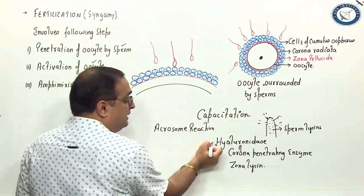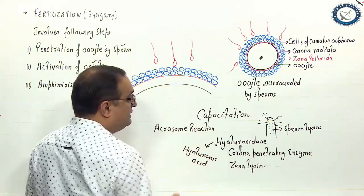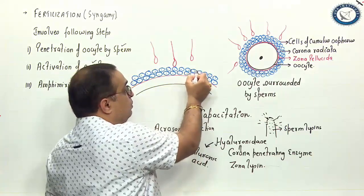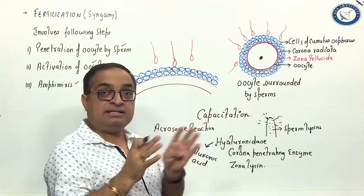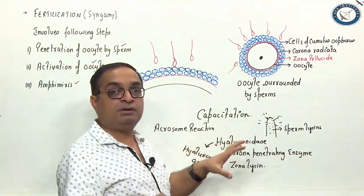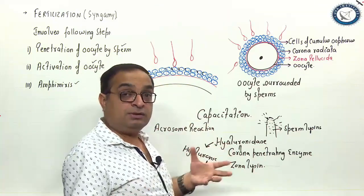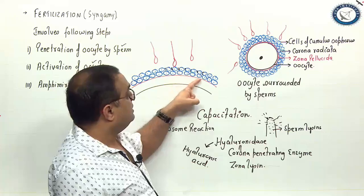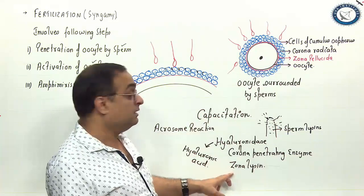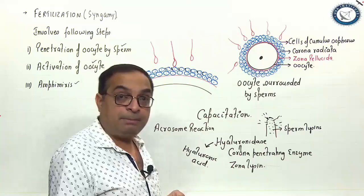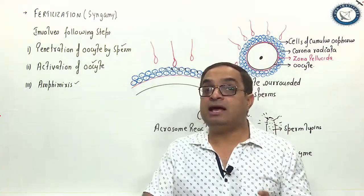Hyaluronidase acts on hyaluronic acid. Hyaluronic acid is a mucopolysaccharide which holds the cells of the cumulus oophorus together. This mucopolysaccharide is holding the cells together and this enzyme will break this and the cells of cumulus oophorus will move away. Corona penetrating enzyme will allow the sperm to penetrate through the corona layer. These are the cells of corona radiata. Corona penetrating enzyme acts on corona radiata. Next is zonalycin. The zonalycin is going to rupture the zona pellucida. That is the penetration of oocyte by the sperm which is involving the acrosome reaction.